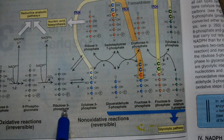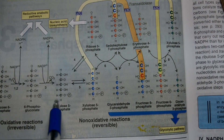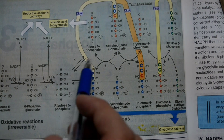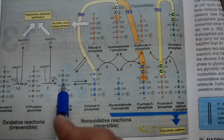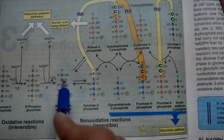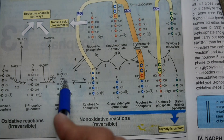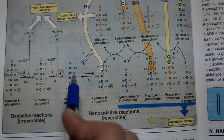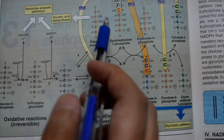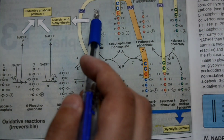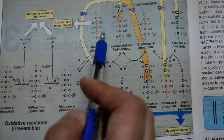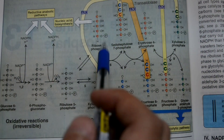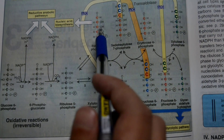When you have '-ulose' in the name, the compound is a ketose sugar. When you have '-ose', it is an aldose sugar. A ketose has a non-terminal carbon doubly bonded to an oxygen atom forming a ketone. An aldose has a terminal carbon doubly bonded to oxygen and singly bonded to a hydrogen, forming an aldehyde. Both ribulose and ribose are isomers, so we use an isomerase enzyme. This ribose 5-phosphate is used directly in nucleotide synthesis.